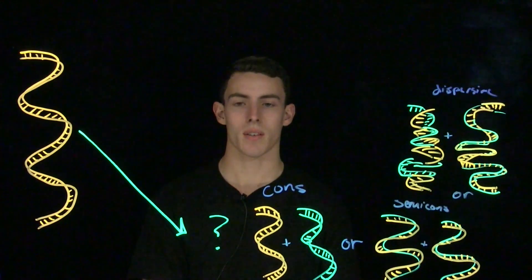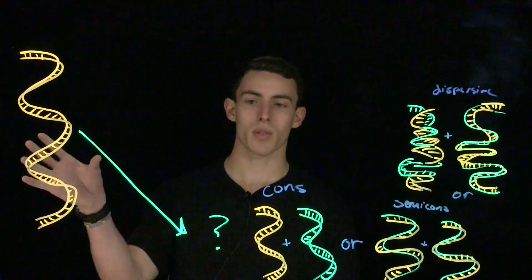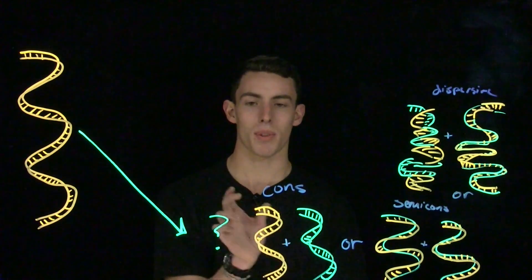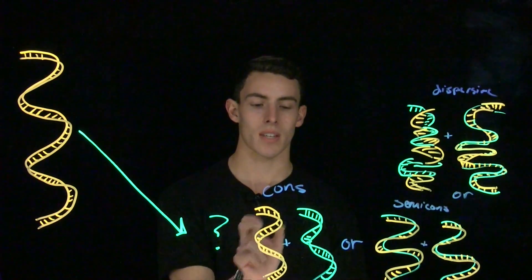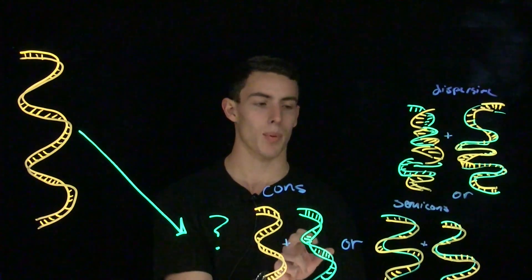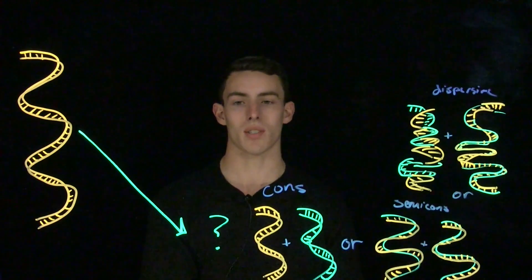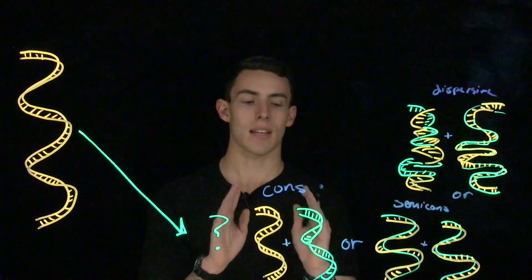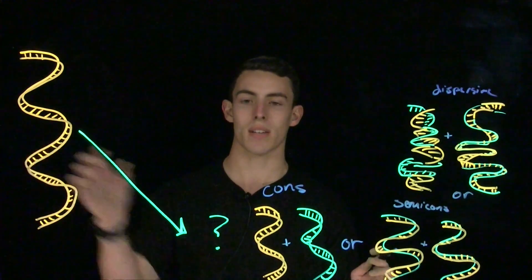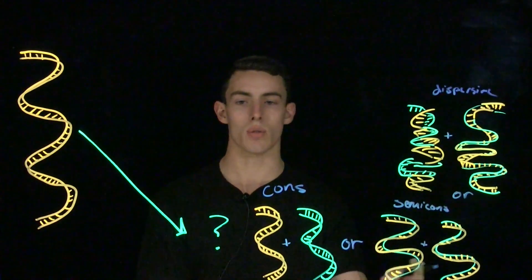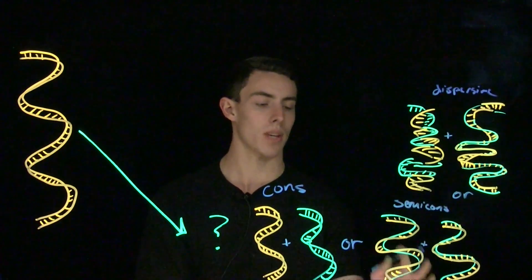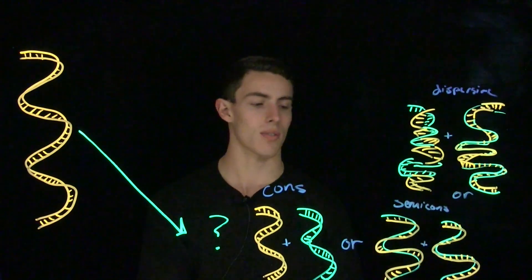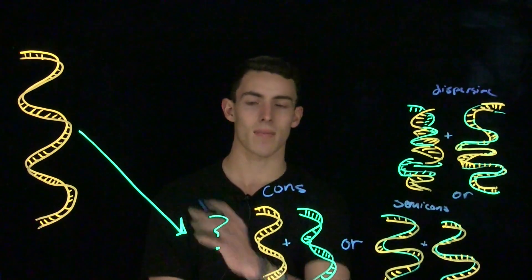In conservative replication, the original strand of DNA serves as a template for a new strand of DNA, but the original strand is completely conserved and the new strand of DNA is completely separate. In semi-conservative replication, a DNA strand splits in half, and each strand from the original serves as a template for a new strand. Thus, we have two molecules of DNA, each somewhat conserving the original strand.